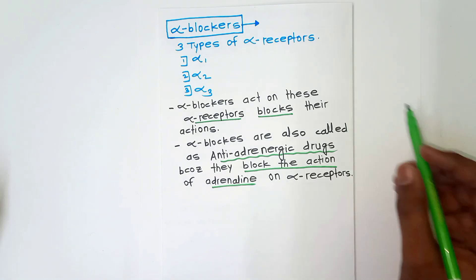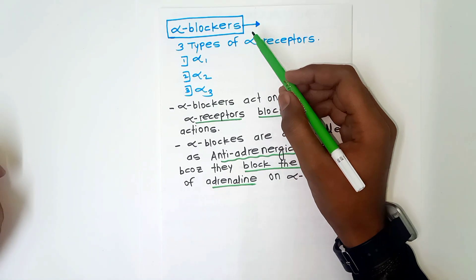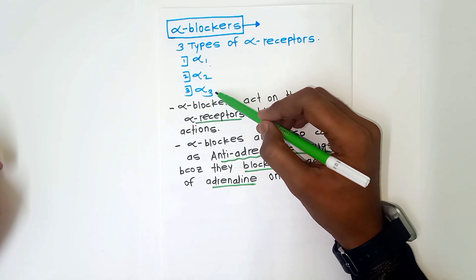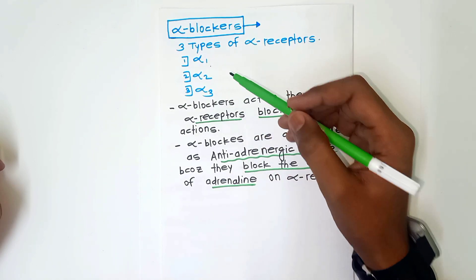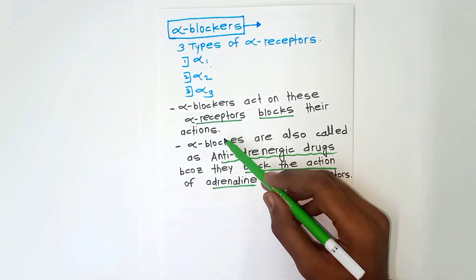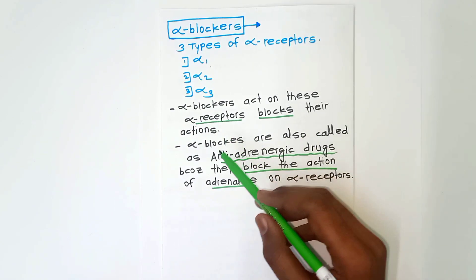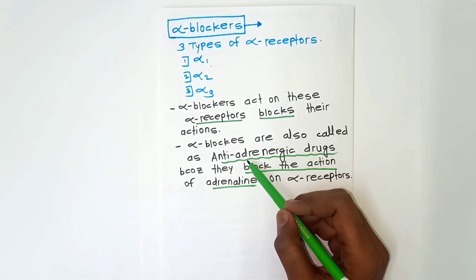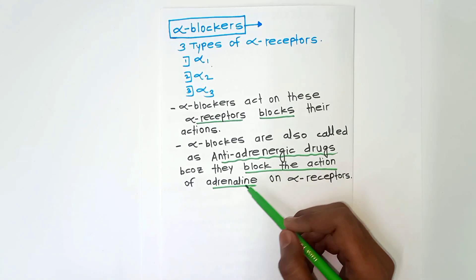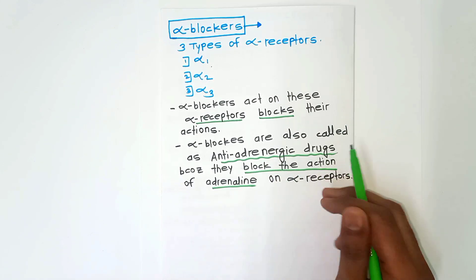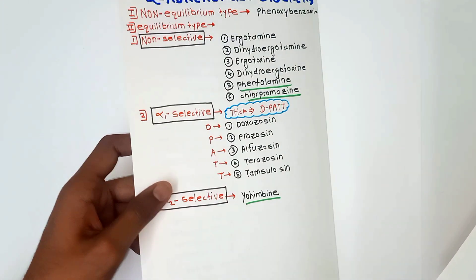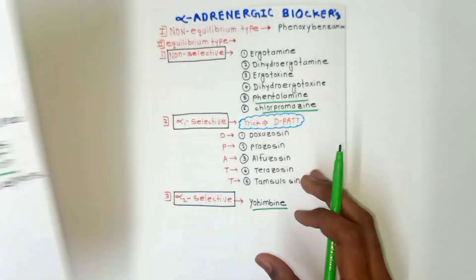Basically, what are alpha blockers? These are alpha receptor blocking agents. There are three types of alpha receptors: alpha 1, alpha 2, and alpha 3. Alpha blockers act on these alpha receptors and block their actions. Alpha blockers are also called anti-adrenergic drugs because they block the action of adrenaline on alpha receptors.